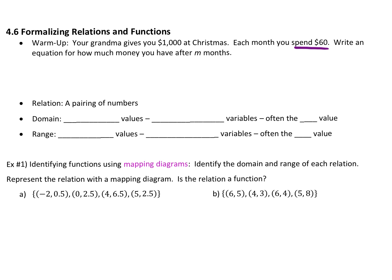I see some that are correct, I see some that are not. So if you put $1,000 into the account and then you spend 60, what operation is that? Minus. Some of you added. So minus 60 per the number of months. Write an equation for how much money you would have. Pick a variable — T for the total amount of money you have, or Y if you like Y. But they gave you M as your month, so use M. If they give you the variables, use what is given. If they don't, then you can define your own.